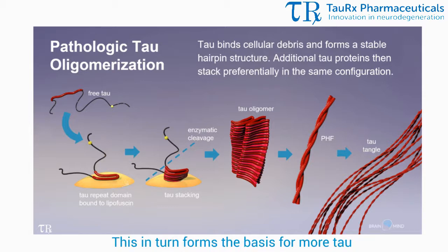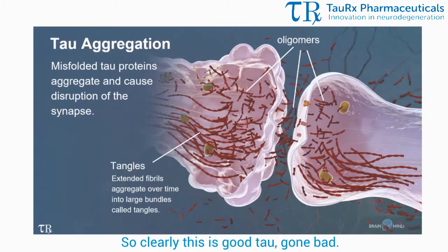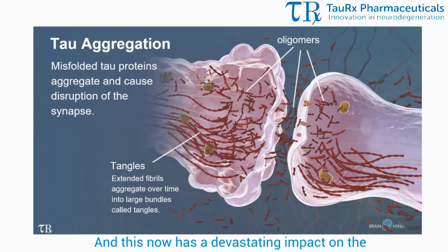This in turn forms the basis for more tau to change and come and add to the stack. The oligomers twist into paired helical filaments and form tangles. So clearly, this is good tau gone bad, and this now has a devastating impact on the neuron and the functioning of the synapse.